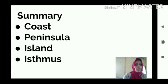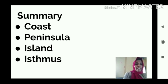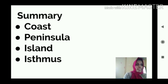I hope what are the things we discussed today is clear. Coast we understood, peninsula, island, and isthmus. I hope today's content is clear for you. Different types of landforms we discussed. That's all for today's portion. Thank you.